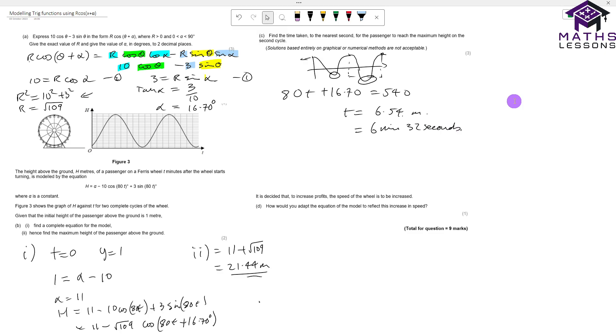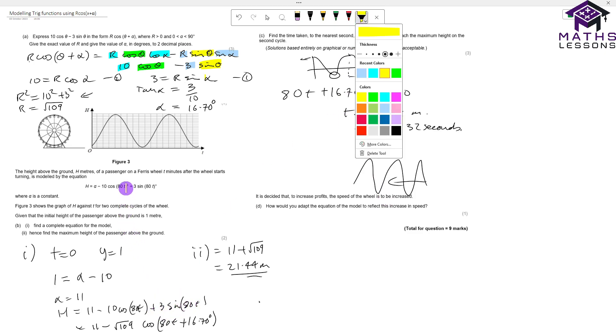How would you adapt the equation model to reflect this increased speed? With this increased speed, we're going to want more oscillations happening in less time, and the key thing that affects that is this part of the equation—the 80 part of the equation here. To get more of those, that number needs to increase. So therefore the answer to that is that we would increase the 80 in the formula.